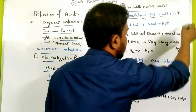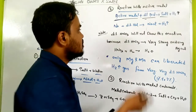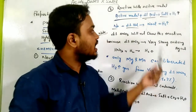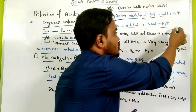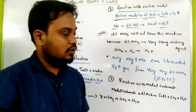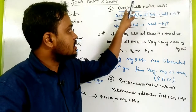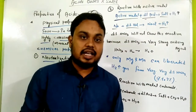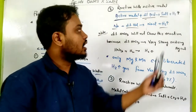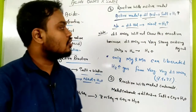When active metal reacts with dilute acid, it forms salt and releases hydrogen gas. For example, sodium reacts with HCl to form NaCl (salt) and H2 (hydrogen gas). No need to learn overly complex reactions — you might forget them in the exam.